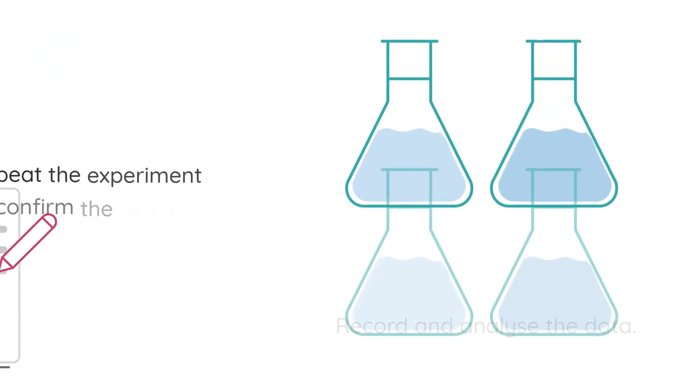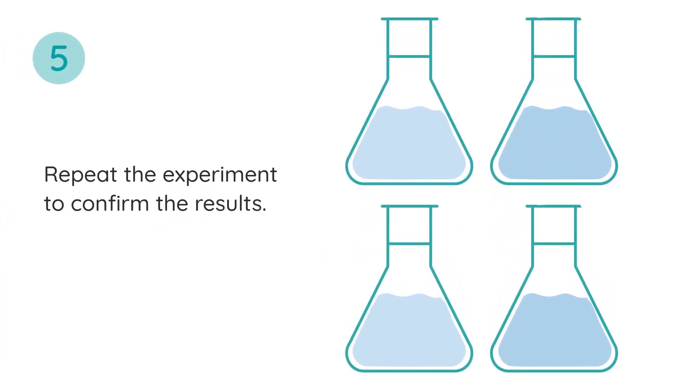The fifth step is to repeat the experiment to confirm your results, and this makes sure that it's not a fluke or a one-off.